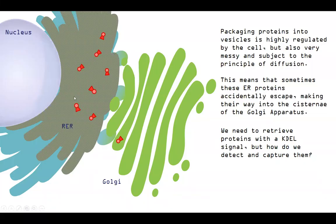So let's zoom back out. We've got a lot of these KDEL proteins hanging out in the rough ER. And again, this is where they should live. Packaging proteins into vesicles, as we saw, can use receptors to really carefully regulate and control what gets packaged in vesicles. But there's a lot going on in here. There's a lot of proteins, a lot of different things. And there's also a little bit of diffusion going on. So this means that ER proteins can sometimes accidentally escape or Shawshank making their way into the cisternae of the Golgi apparatus. So we need some way to be able to retrieve the proteins with the KDEL signal. And how do we detect and capture them?